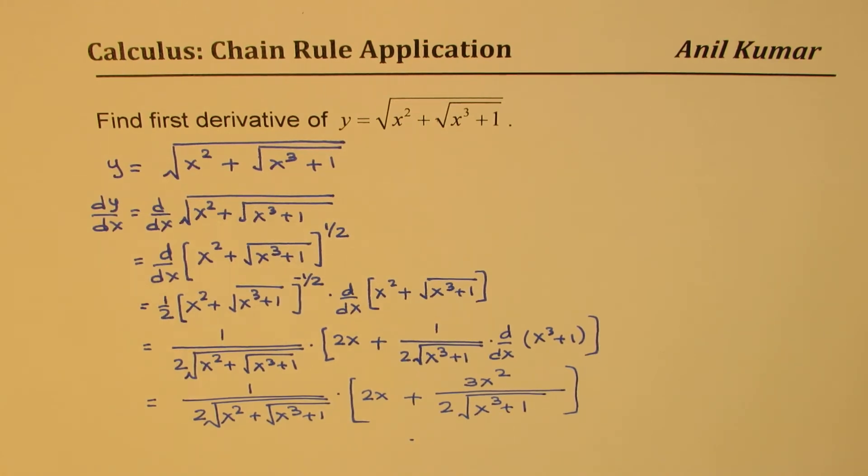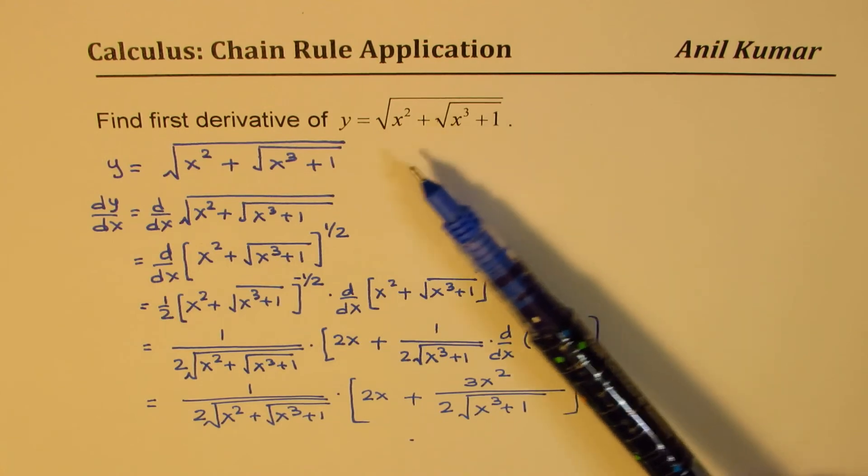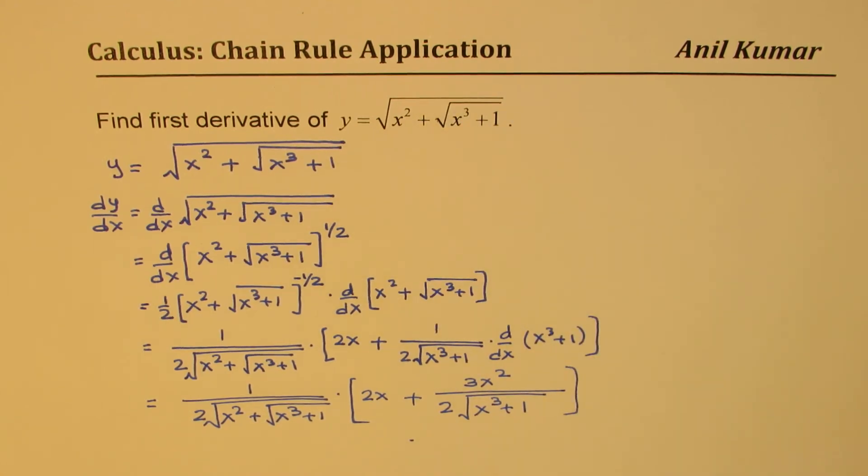So that is how we could actually find derivative of nested functions with these square roots. You can see how useful the chain rule is - the chain rule is to really find derivative of function within function or when we have composition of functions. I hope that makes sense.